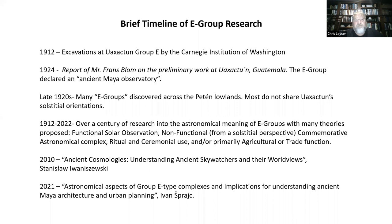The first E-group was excavated at Washaktun by the Carnegie Institute of Washington back in 1912. In 1924, they published the report by Franz Blom on the preliminary work at Washaktun, Guatemala. And it was from this report that the concept of the E-group as an ancient Maya observatory came out of.